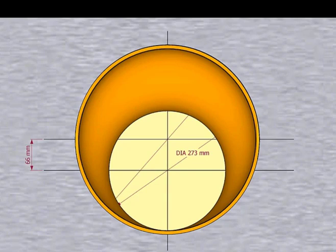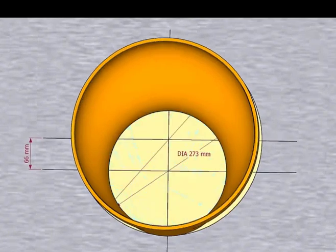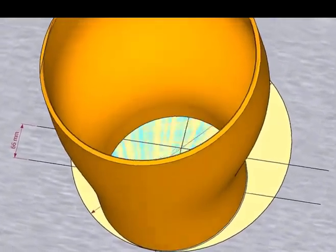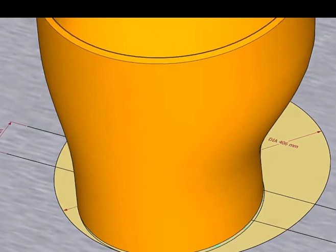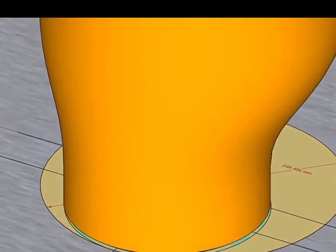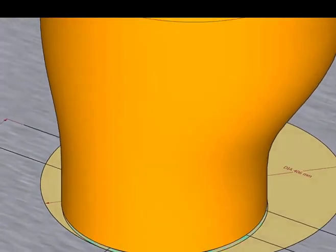Place the reducer on the layout, facing the small end down. Inspect carefully if the reducer sits on the circle correctly.